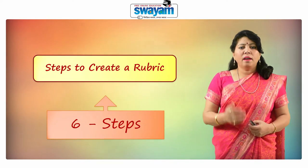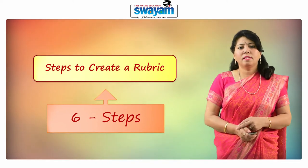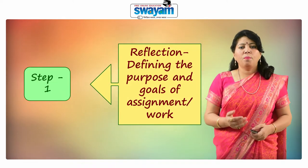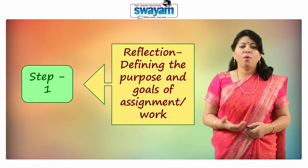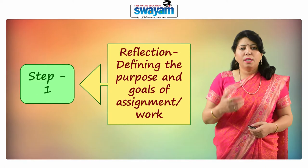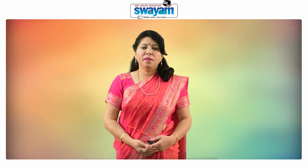There are basically six steps to create a rubric. The first step is reflection — defining the purpose and goal of the assignment, meaning why we are going to create a rubric. The first step in creating any rubric is to clarify the purpose of the assignment and identify the task students need to learn. It is very important that the purpose should be well defined in advance.